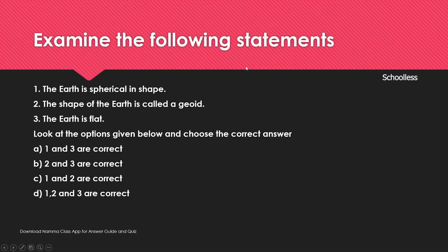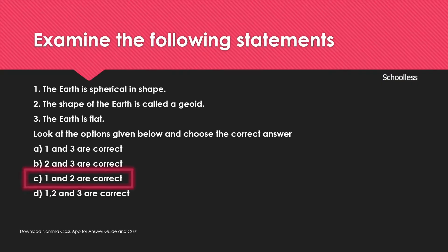Examine the following statements: Statement 1 — the Earth is spherical in shape; the shape of Earth is called a geoid. Statement 2 — the Earth is flat. Earth is not flat; the poles are slightly flattened but Earth is generally spherical in shape. So option C is the correct answer.